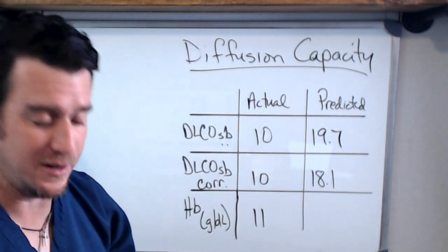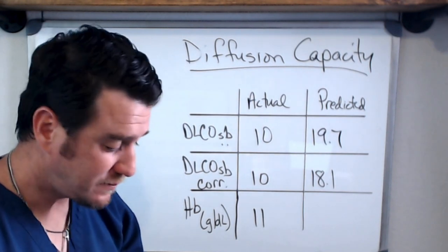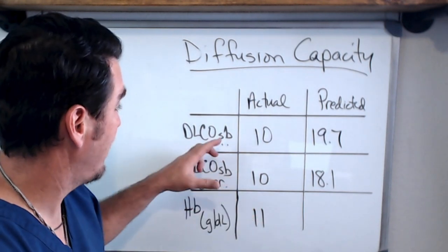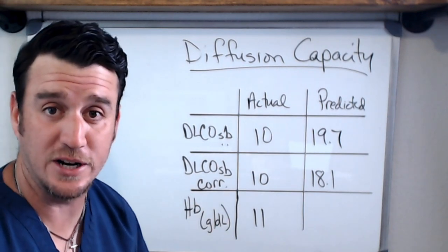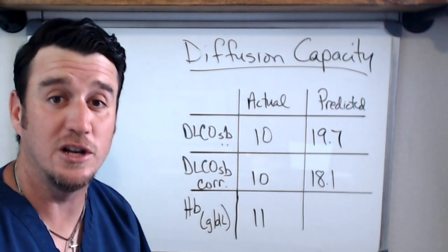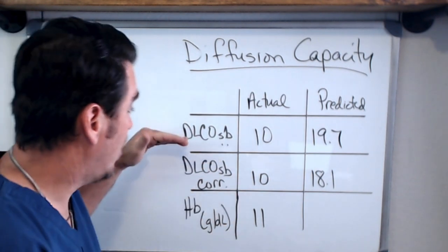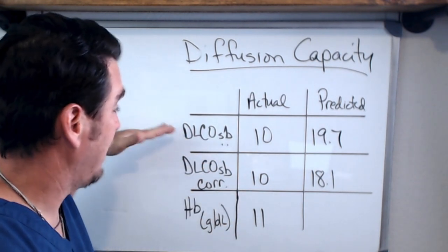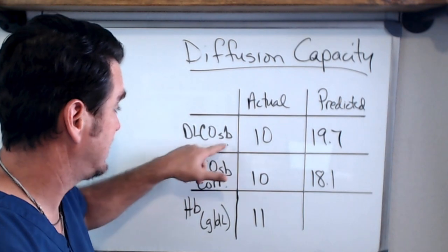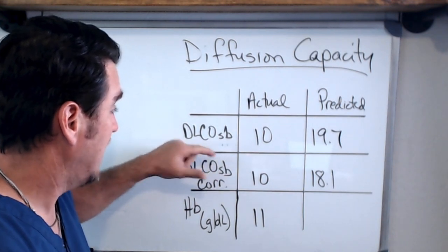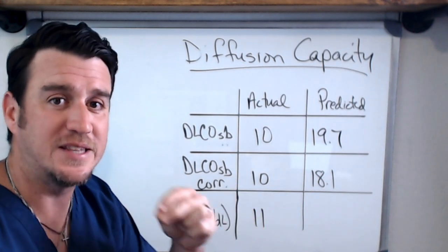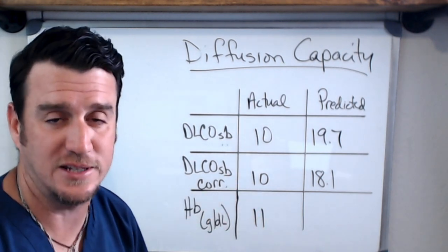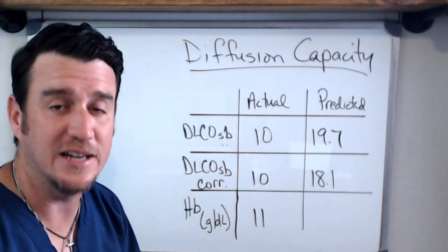I'm going to grab my calculator here so I can do the math. We see that we have basically three columns and this is what's important to understand when you start looking at these. You don't want to take if this is the only column that's given, single breath DLCO, if this is the only one that's given then obviously that's what you have to work with. But the key to the accuracy of this study is understanding that it has to be corrected for hemoglobin.